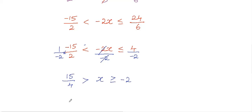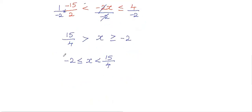So finally we get fifteen over four, greater than X, greater than or equal to minus two. This can be rewritten as minus two, less than or equal to X, less than fifteen over four. This is the solution for the given compound inequality.